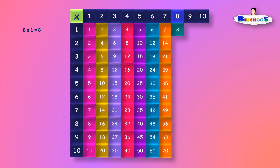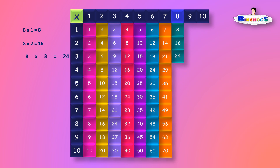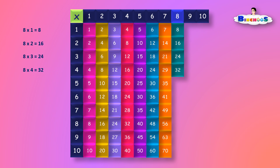8 times 1 is equal to 8. 8 times 2 is equal to 16. 8 times 3 is equal to 24. 8 times 4 is equal to 32. 8 times 5 is equal to 40.